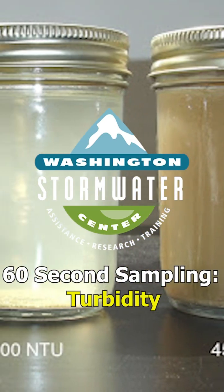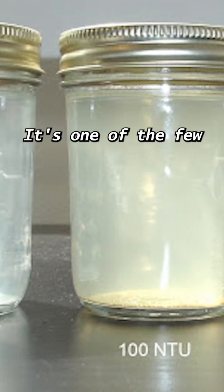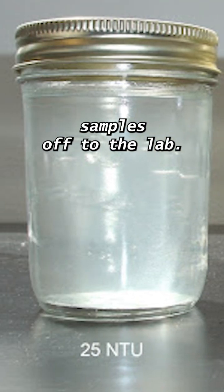Turbidity is the cloudiness of your stormwater, often caused by sediment. It's one of the few parameters that we can measure in-house without sending samples off to the lab.